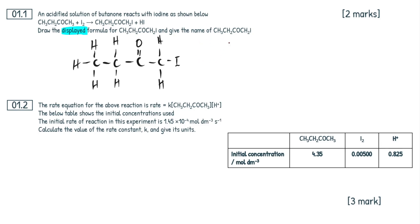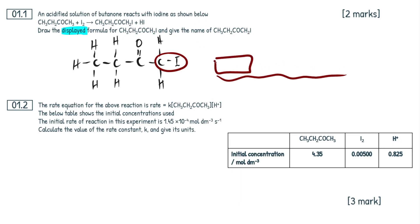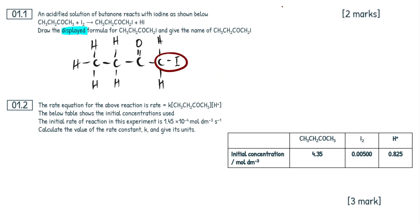Now we have to name it. Here's a juicy tip: when we're dealing with something that has a halogeno or haloalkane — so C-I, C-Br, C-Cl, something like that — this is always the lowest priority. It doesn't matter what else is in the molecule, the halogen is always going to be the lowest priority. So when we're dealing with IUPAC nomenclature, the lowest priority group goes as the prefix — the start of the name — and the other functional group present is going to be the suffix.